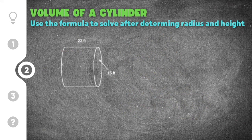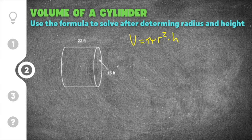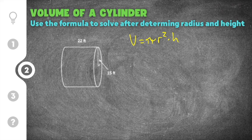Moving on to our next practice problem. This cylinder has been labeled with 22 feet and 15 feet. A very common mistake is thinking the distance from bottom to top is always the height, but this cylinder has been turned on its side. The distance from one base to the other base is always the height, and the distance from the center of a base to the edge is the radius. So radius is 15 feet and height is 22 feet.